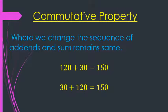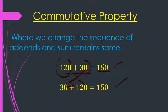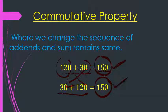The very first property is the commutative property, where we change the sequence of addends and the sum remains the same. When we add 120 plus 30, we get the answer as 150. Now when we change the sequence and add 30 plus 120, we again get the same answer, 150. So we can say that changing the order of addends does not change the sum.